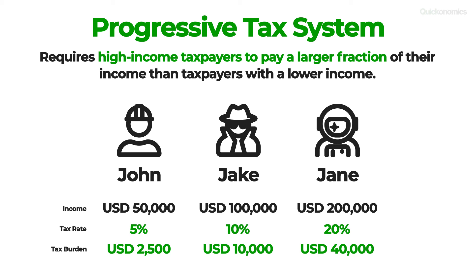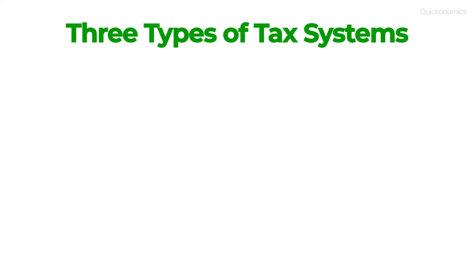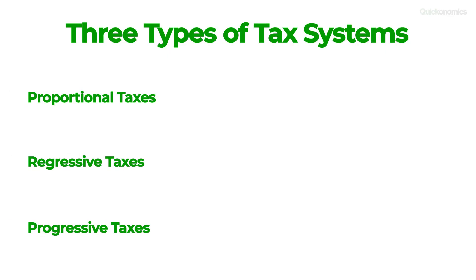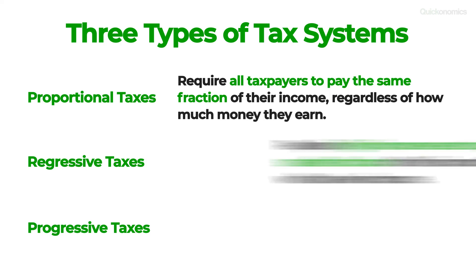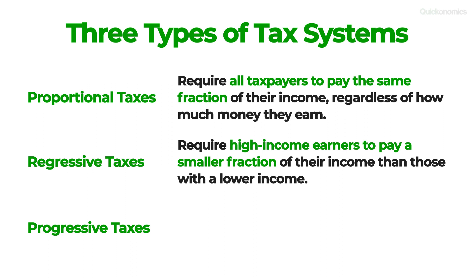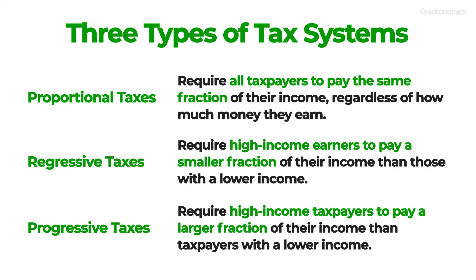Note that despite the higher tax rate, Jane still has more money after paying the tax than the other two, and Jake still has more than John. Therefore, the higher tax burden doesn't affect them as much because they can afford to pay more and still have enough money in the bank. To sum up: proportional taxes require all taxpayers to pay the same fraction of their income regardless of how much they earn; regressive taxes require high-income earners to pay a smaller fraction of their income than those with a lower income; and progressive taxes require high-income taxpayers to pay a larger fraction of their income than taxpayers with a lower income.